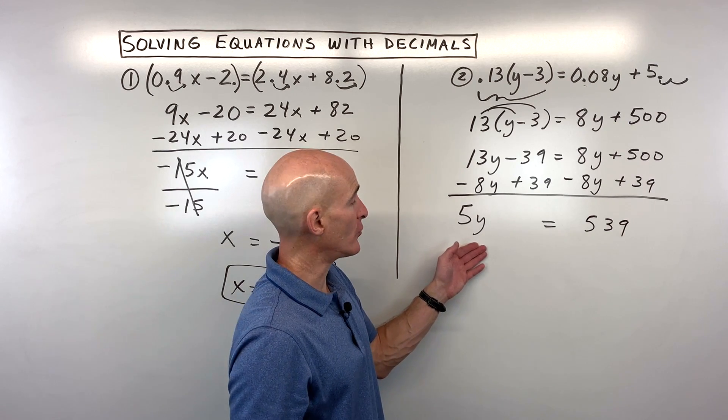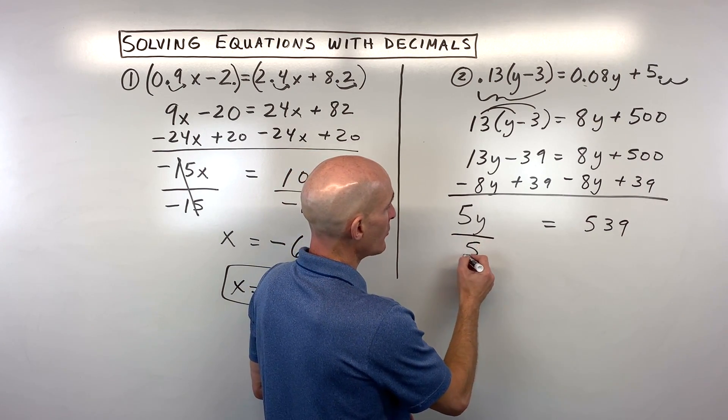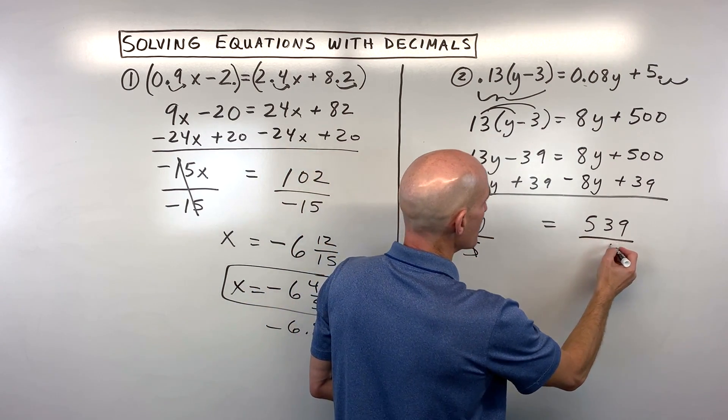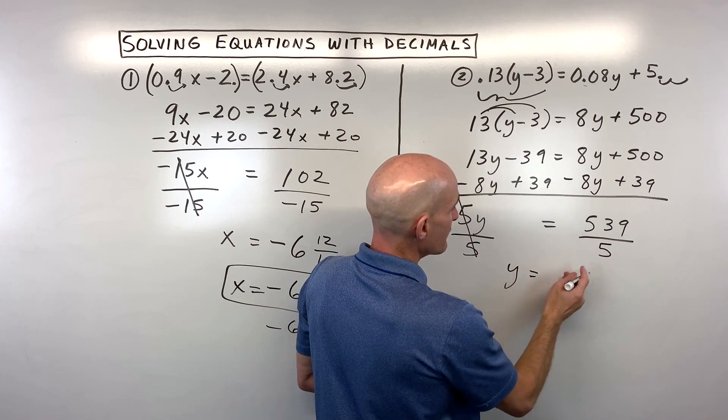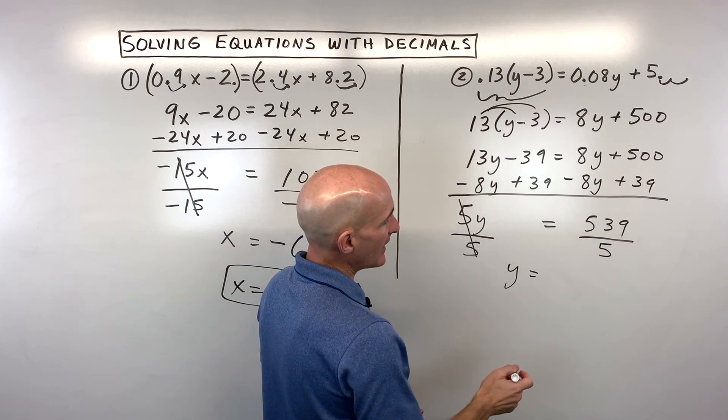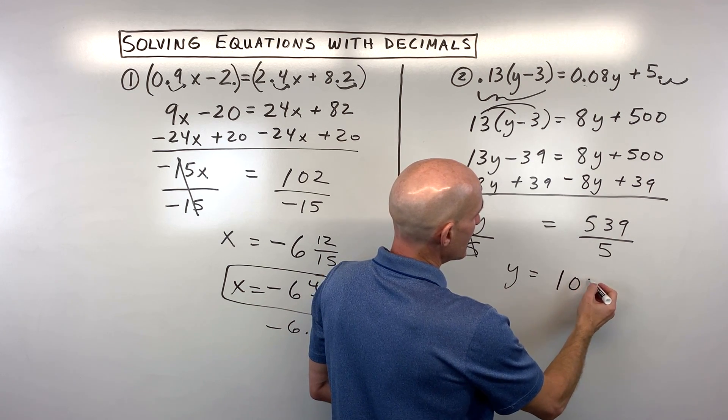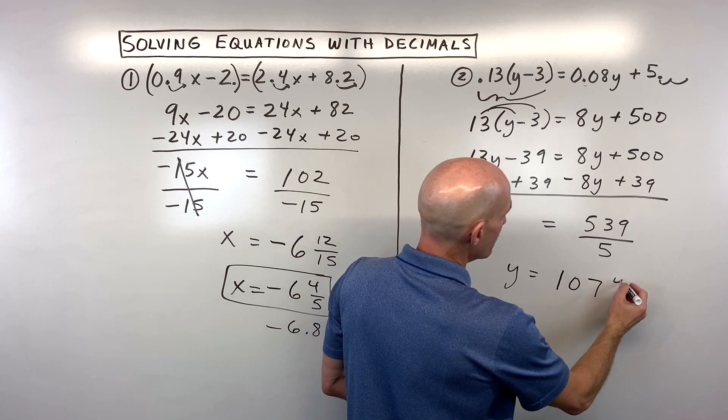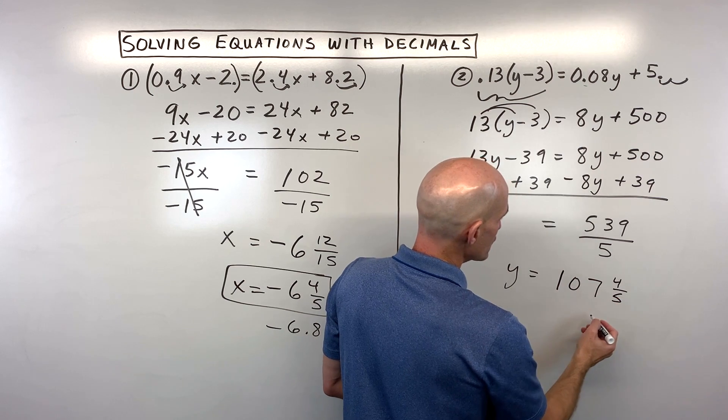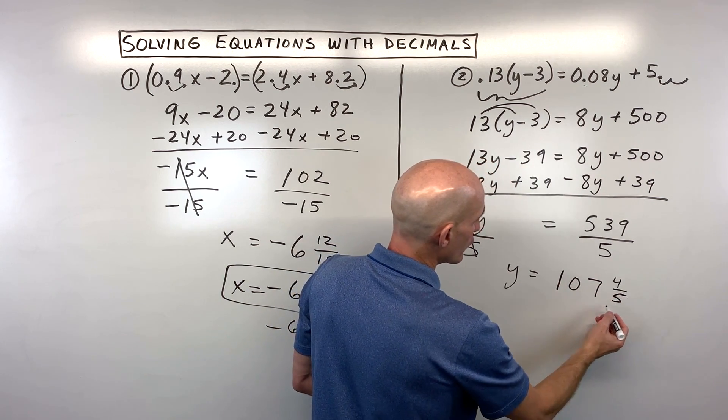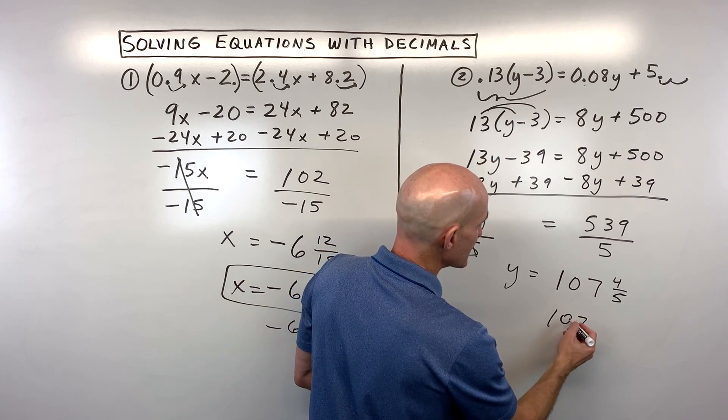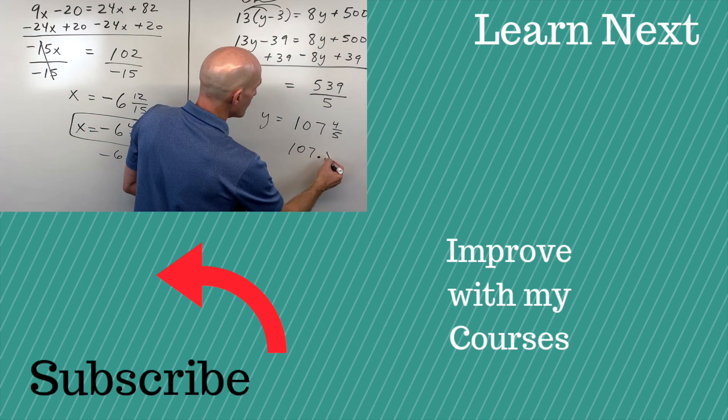And lastly we just want to solve for one of our variables. So instead of multiplying by 5, let's divide both sides by 5. And let's see, 5 goes into 539 how many times? Looks like 107 with 4 left over. So you could say 107 and 4/5, or if you wanted to write it as a decimal, that would be 107.8. And you got it.